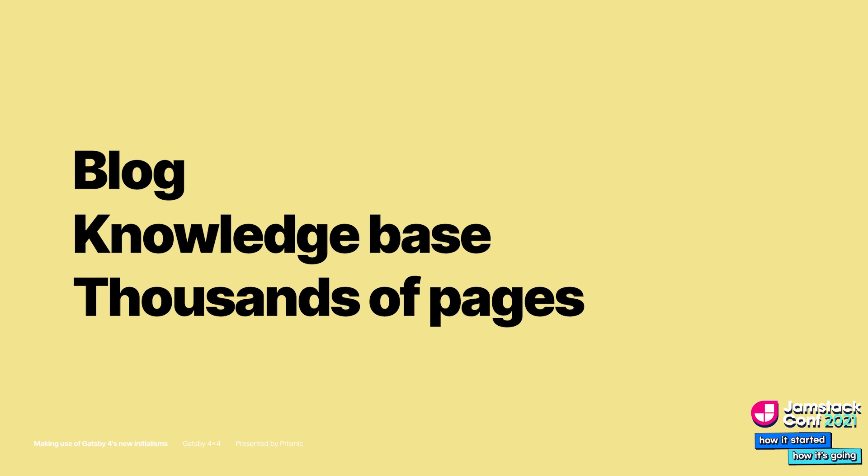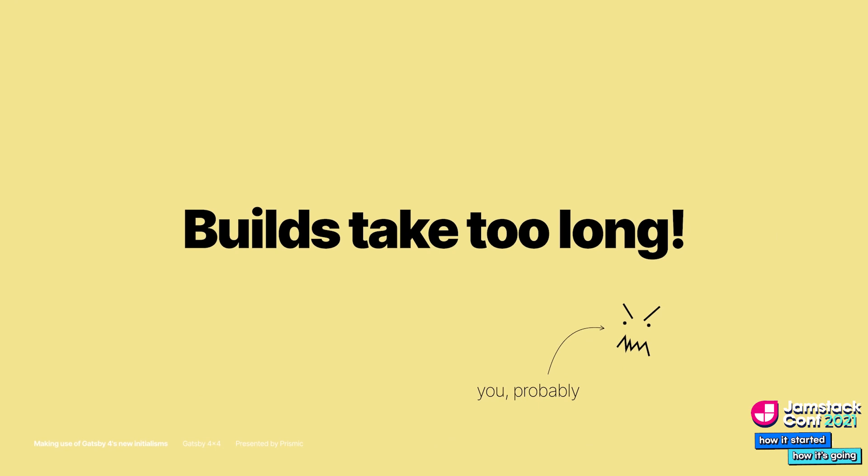Like a good JAMstack developer, you build everything statically to serve the best performing site, and your Web Vital metrics are brag-worthy. But it isn't without problems. The problem is your builds take too long every time there's a content or code change. Building a large site takes time — on a fresh build, this could take 15 minutes or more.